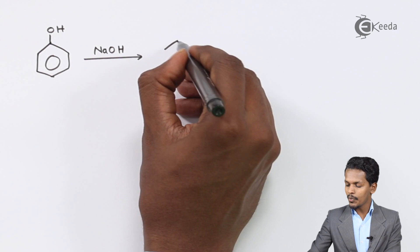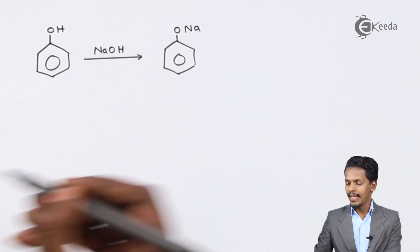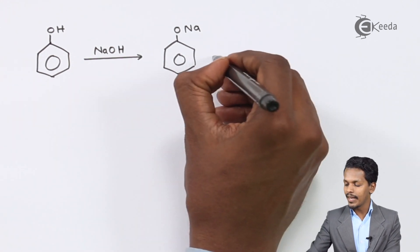So in this case, the product that we could obtain here is phenoxide ion, that is sodium phenoxide ion, and now this phenoxide actually will react with carbon dioxide.